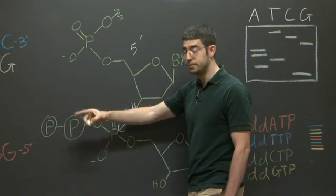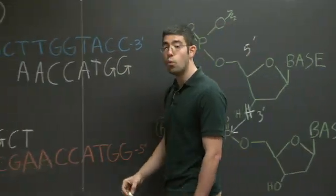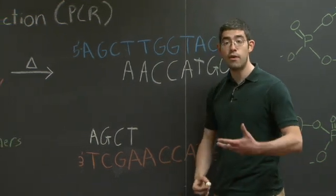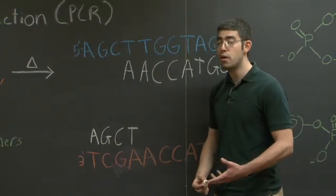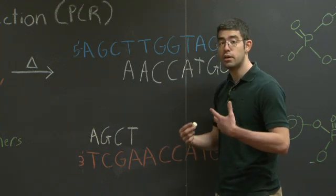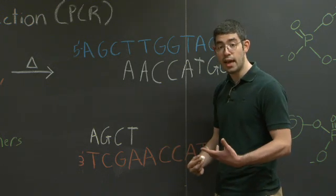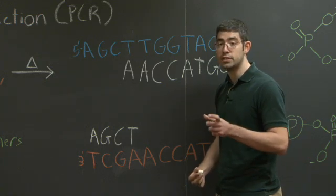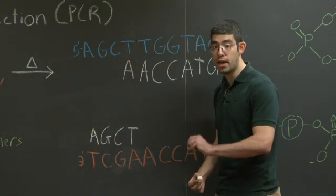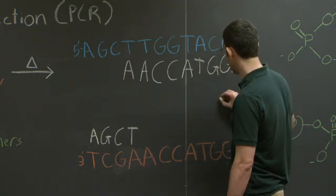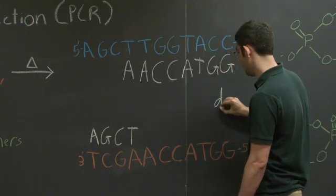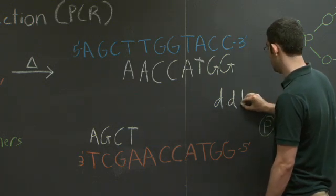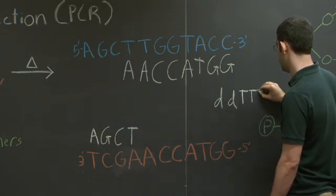Let's go back to our example with the primers. What does that mean for here? Well, let's say you have a normal PCR reaction. But in addition to the four deoxyribonucleic acids you have, you also take a little bit of dideoxyribonucleic acids of one of the types. So let's say we add in some ddTTP.